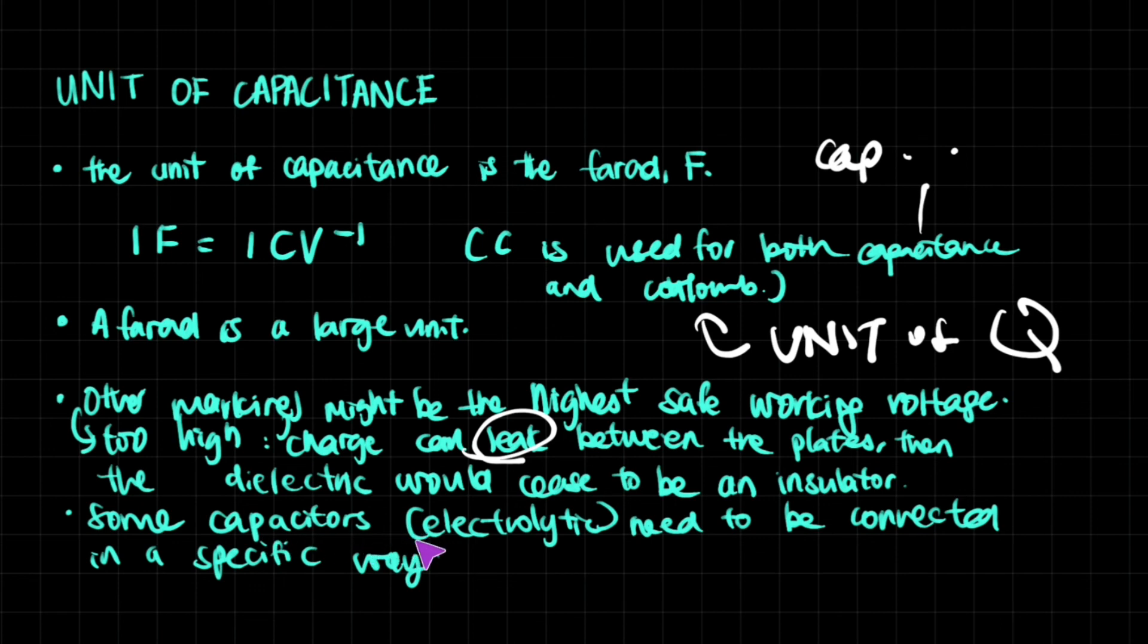Some capacitors are electrolytic capacitors and they need to be connected a specific way. So you would have like they would mark this is supposed to be on the positive side. This is supposed to be a negative side. Then you would need to connect that to the positive terminal and the negative terminal of a cell. So those are the markings that you might find on a real life capacitor.